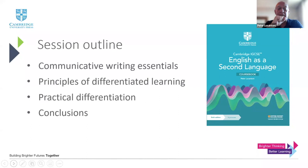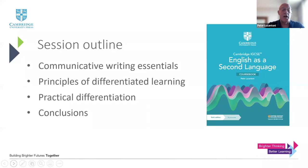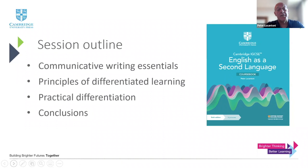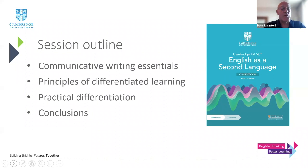What we're going to do today is cover three main things and hopefully be able to draw some conclusions as well. The first thing is we're going to think about communicative writing essentials - what underpins communicative writing, what we need to be looking for, what should be evident when we're tasking students to write in a communicative way. Then we're going to look at six principles of differentiated learning and talk about how those principles fit into our teaching practice in the classroom.